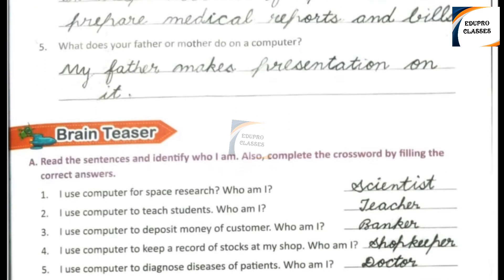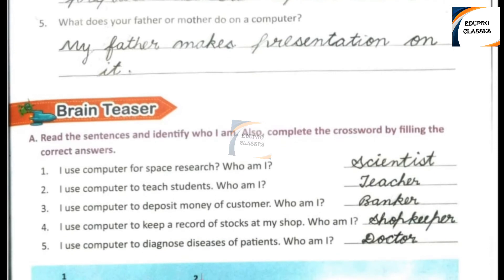Brain Treasure: Read the sentences and identify who I am. Also complete the crossword by filling in the correct answers. Number 1: I use computer for space research. Who am I? Right answer: Scientist. Number 2: I use computer to teach students. Who am I? Right answer: Teacher. Number 3: I use computer to deposit money of customers. Who am I? Right answer: Banker.